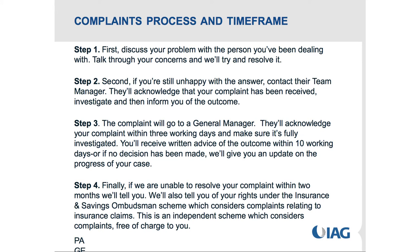Most insurers follow something similar to this process. Step one is you raise the complaint with the person you've been dealing with directly - your case manager or loss adjuster. If you don't get a response, step two is asking to speak to their team manager, who will acknowledge the complaint in writing, investigate, and inform you of the outcome. Step three is the complaint goes to a general manager, who acknowledges within three working days, fully investigates, and provides written advice of the outcome within 10 days - or an update with next steps if no decision has been made.